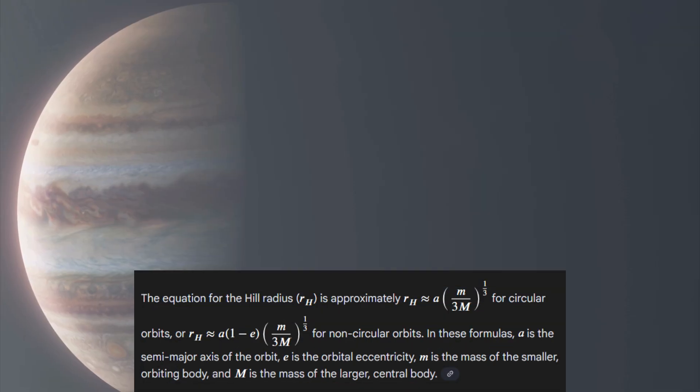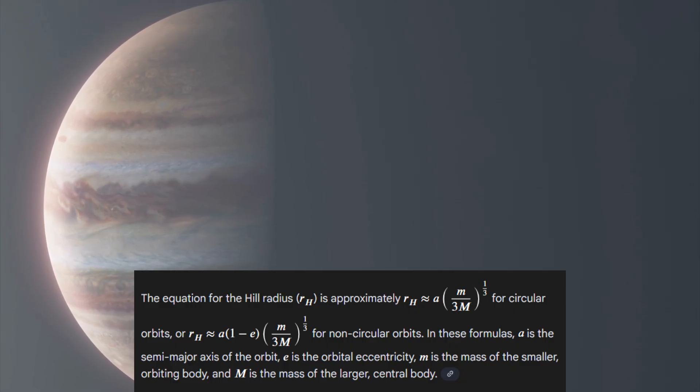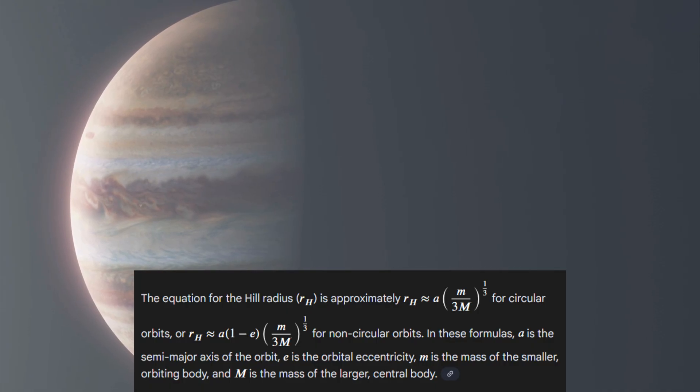And this hill radius isn't some random number. It's a precise mathematical calculation based on Jupiter's mass, the Sun's mass, and the exact orbital distance between the two at any given moment. It's pure physics. Clean, predictable, and extremely exact.